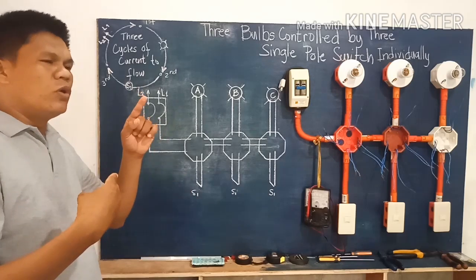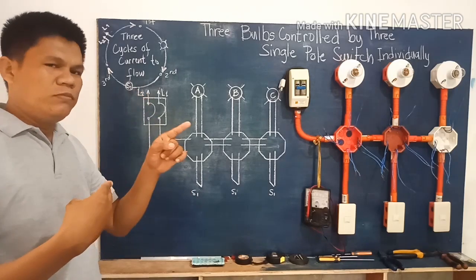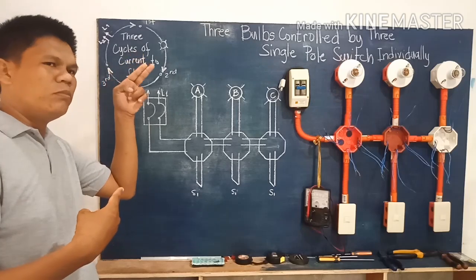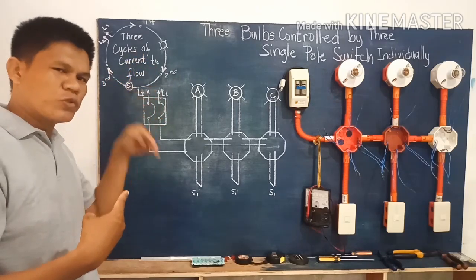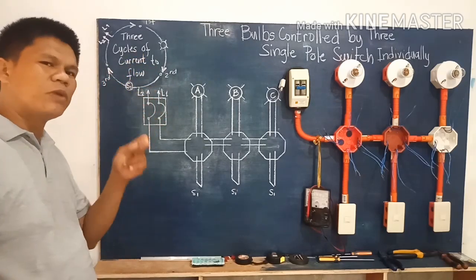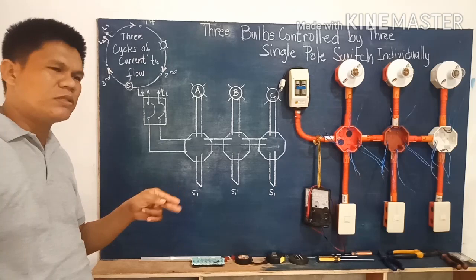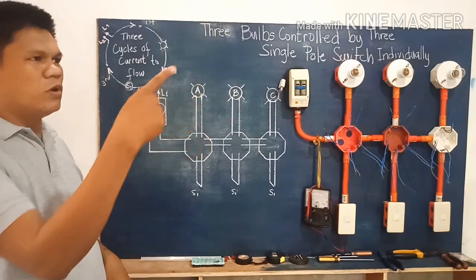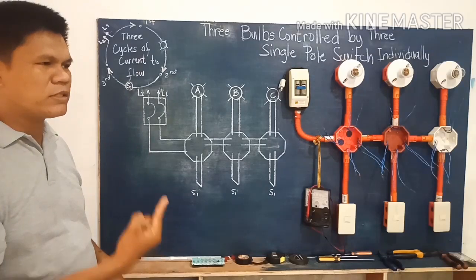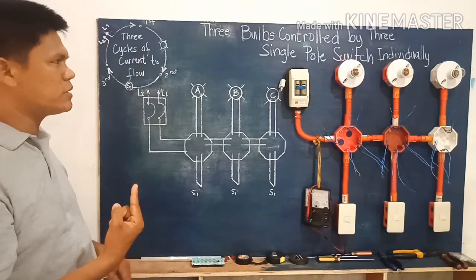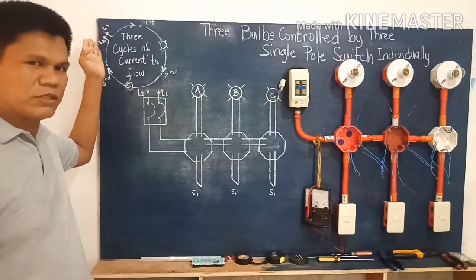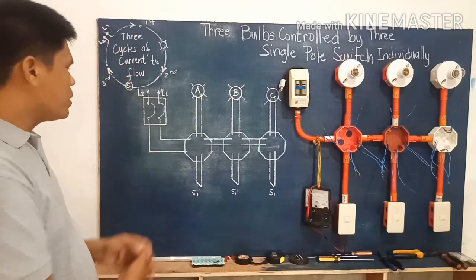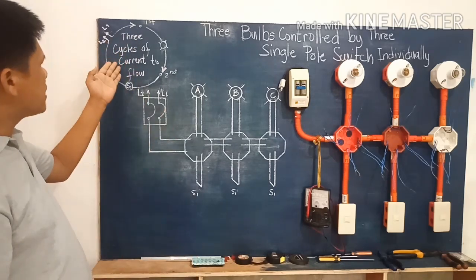Take note of the three things to be done: first, from source to load; second, from load to control device; third, from the control device to the source. So those are the three cycles of current flow in the circuit.